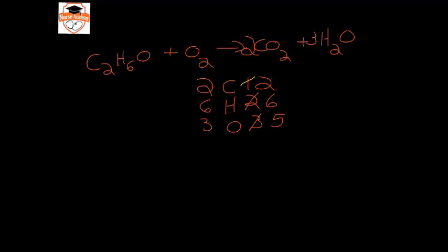And instead of having five oxygens I'll have this two times this two makes four, this three times this one makes three so that is seven oxygens.